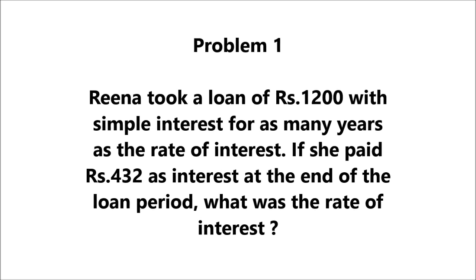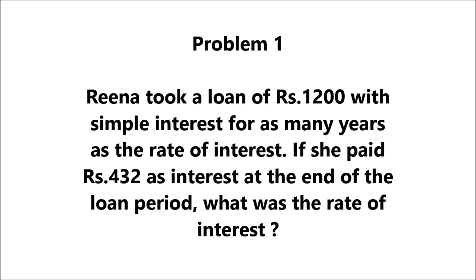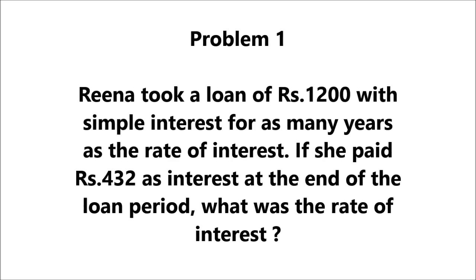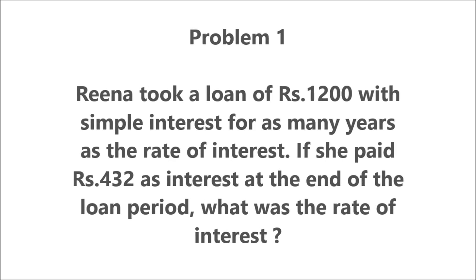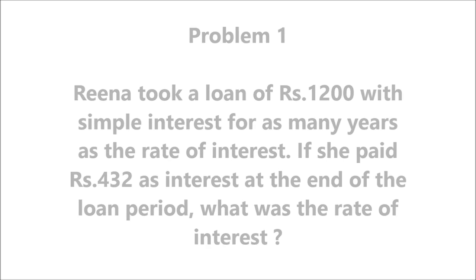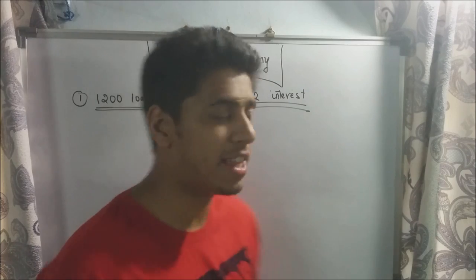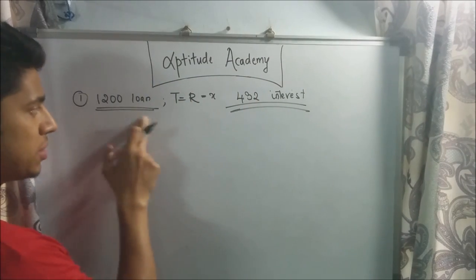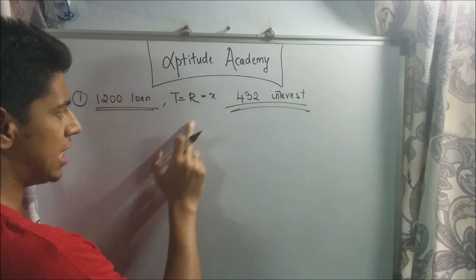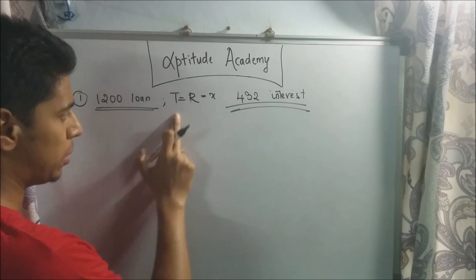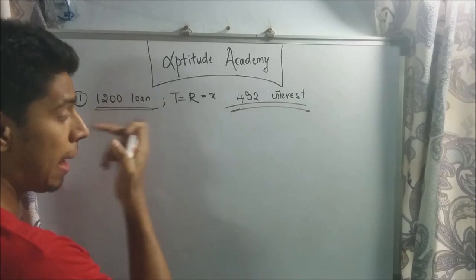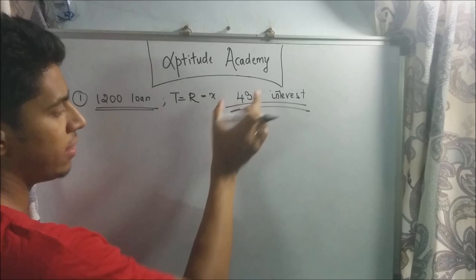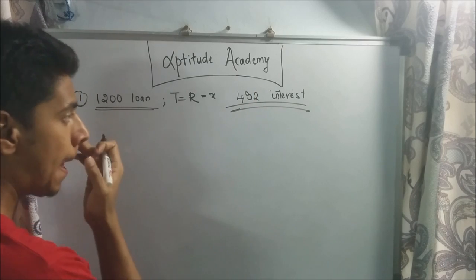...as many years as the rate of interest. If she paid rupees 432 as interest at the end of the loan period, what was the rate of interest? Now for the first sum, Reena takes a loan of rupees 1200 at a rate of interest equal to the time period, and the interest she has to pay the bank at the end is rupees 432.